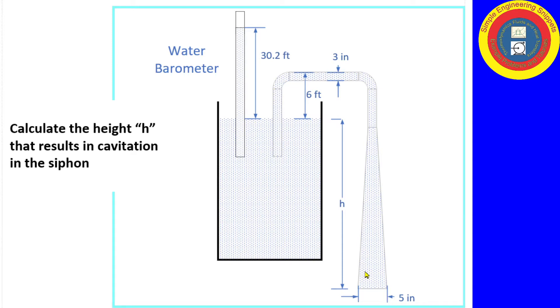This example problem is actually very similar to one I worked in a previous video. However, there are some added complexities, one being that the siphon diameter changes. It's a five-inch diameter at the outlet, and it reduces down to three inches diameter at the upper elevations.